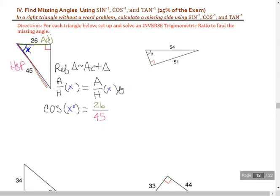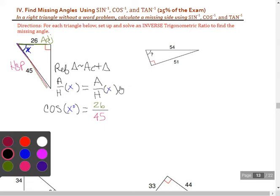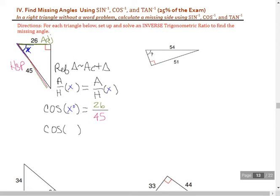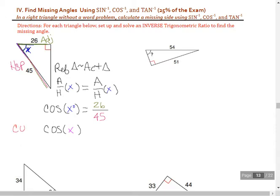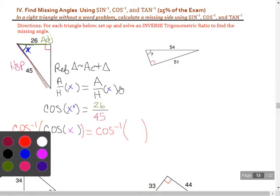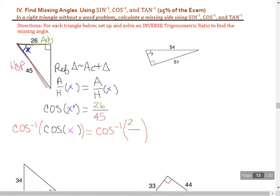The adjacent side of our actual triangle in reference to x is 26 and our hypotenuse is 45. So we have our two side lengths, we just need to kill cosine. If I have a cosine of any angle value, I can get rid of the cosine by applying the inverse cosine.